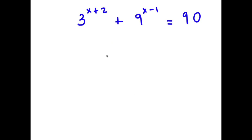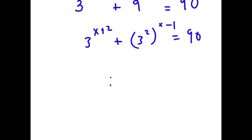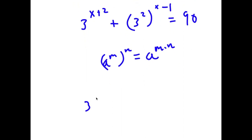In this problem, I have 3 to the power of x plus 2 plus 9 to the power of x minus 1 is equal to 90. To solve this, I'm going to first rewrite 9 as 3 to the power of 2. So now I have 3 to the power of x plus 2 plus 3 to the power of 2 to the power of x minus 1 is equal to 90. Using the property a to the power of m to the power of n equals a to the power of m times n, the exponent becomes 2 times x minus 1, which is 2x minus 2.